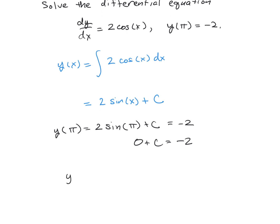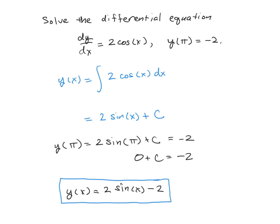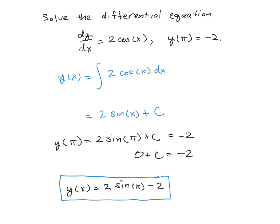So our solution then is y of x is 2 times the sine of x minus 2. And again, this function right here now satisfies two conditions. It has a derivative that is equal to 2 times the cosine of x. And it will also give you the value of negative 2 when you evaluate it at pi. And therefore, we have the solution of this differential equation.